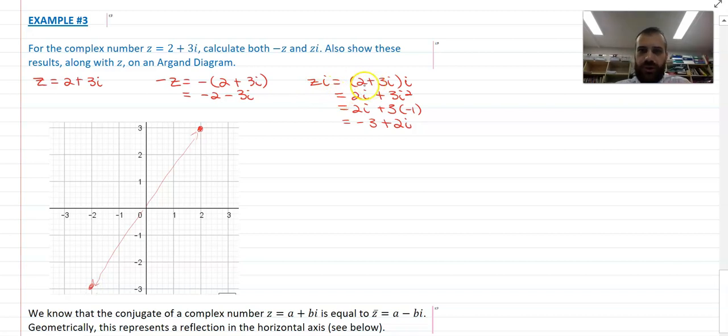Watch what happens when you multiply by i. 2 plus 3i multiplied by i. You get 2 times i, which is 2i. That means the real component becomes an imaginary component. Think about that.